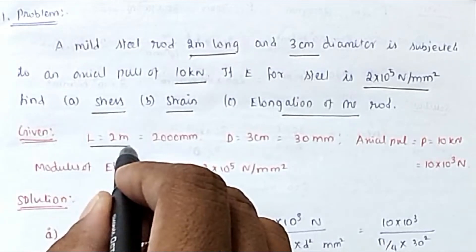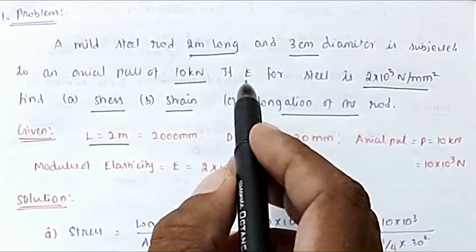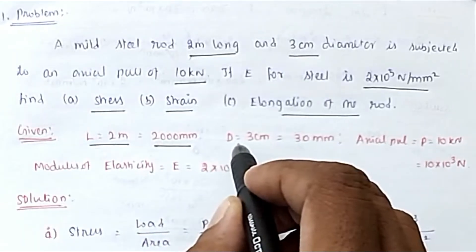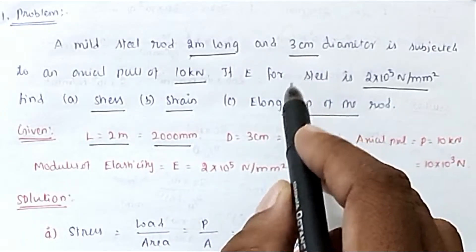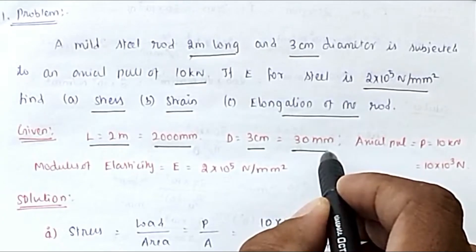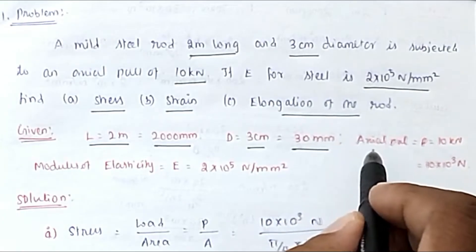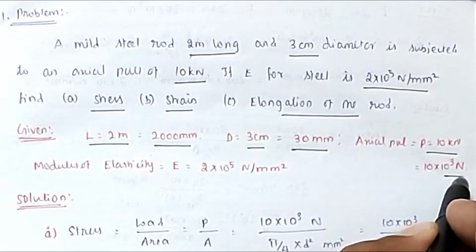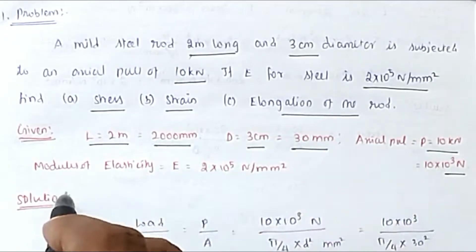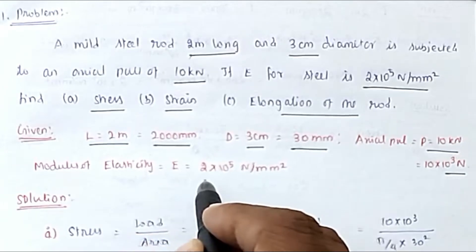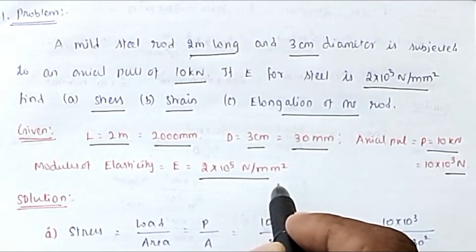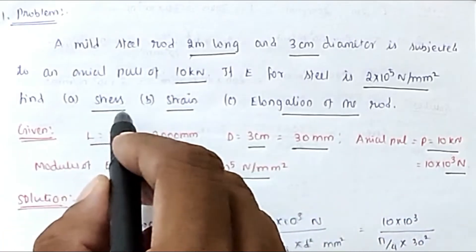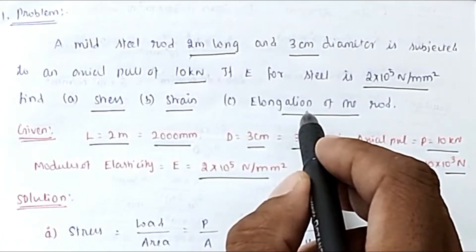The given values are: L = 2 meters, which we convert to 2000 mm. Diameter d = 3 cm = 30 mm. Axial pull P = 10 kN = 10×10³ N. Modulus of elasticity E = 2×10⁵ N/mm². First we find stress, then strain, and then elongation.